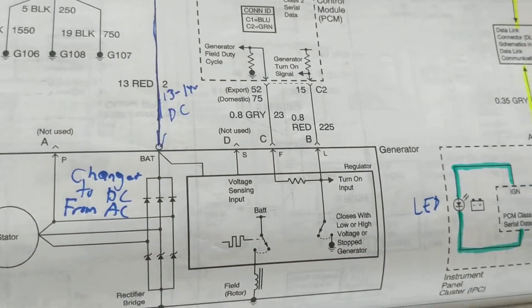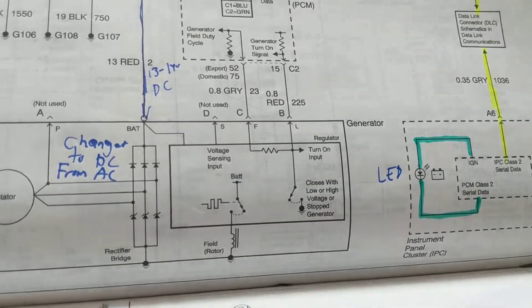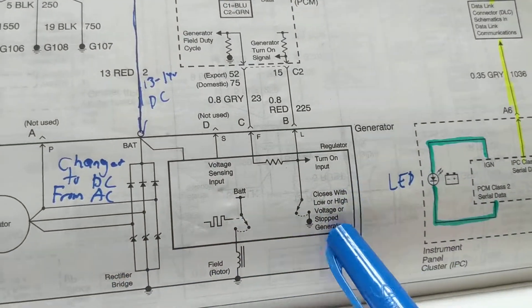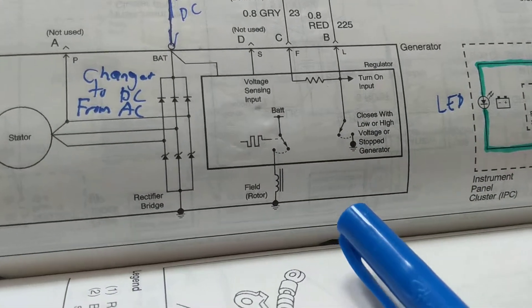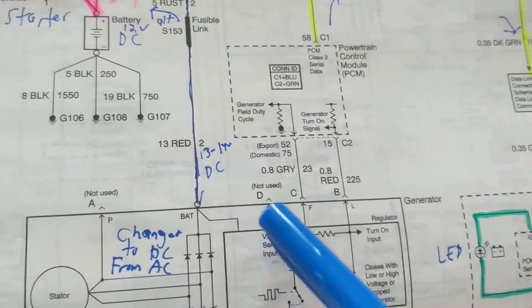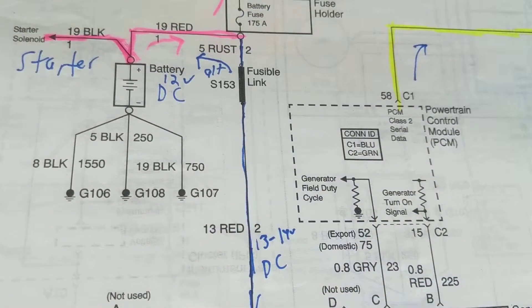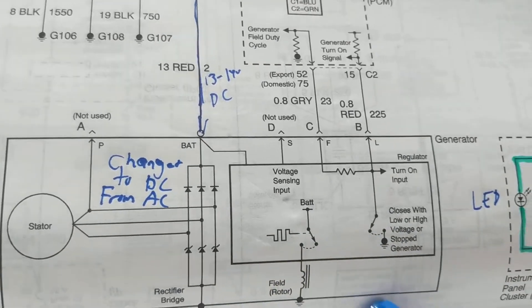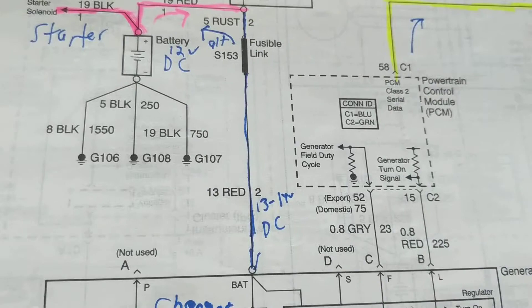I call it an AC generator because it does produce AC alternating current sine waves. But in this case, we don't need sine waves. I can't take AC to charge a DC battery. What I need is to change the AC to DC, the same as the battery.